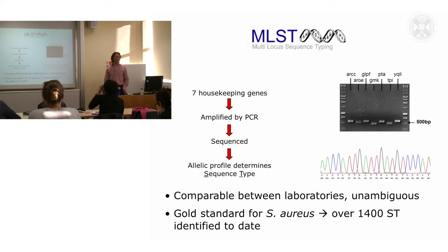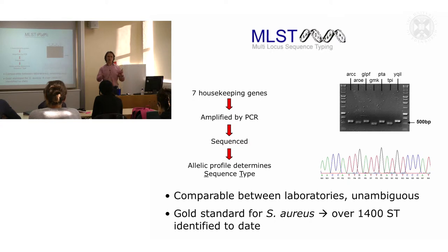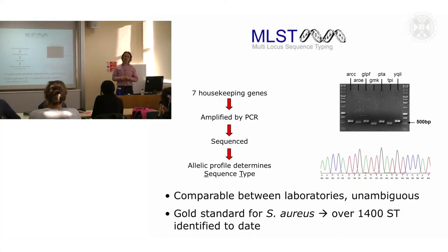There are now over 3,000 sequence types identified for Staph aureus. You define a new sequence type by the fact that it differs at at least one single nucleotide among the seven housekeeping genes that have been sequenced. This has given us a good sense of the overall population diversity for the Staph aureus species.